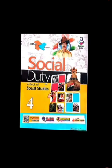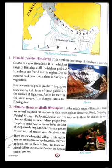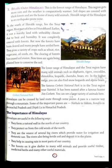Good morning students, welcome to SGPS online classes. We were reading Chapter 1, the Northern Mountains. In this chapter I explained to you about Mount Everest, Godwin Austin, Kanchengjunga, and I also told you about the three parallel ranges of Himalayas, which are Himadri the greater Himalayas, Himachal the lesser Himalayas, and Shivalik the outer Himalayas.